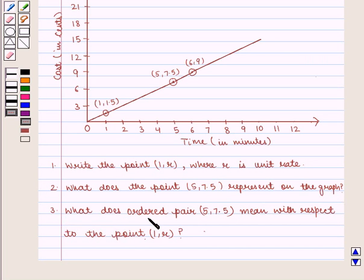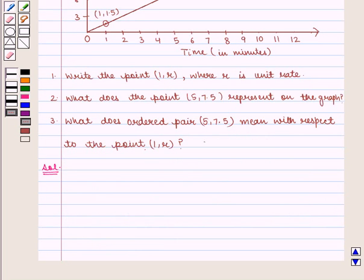Third, what does the ordered pair (5, 7.5) mean with respect to the point (1, R)? Let us proceed to the solution.